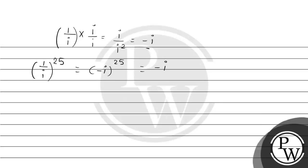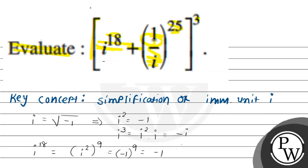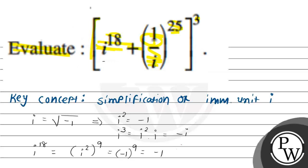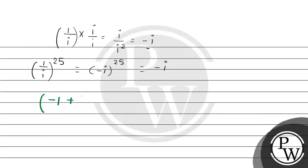Now, substituting this value into the main expression. We get: i raised to 18 is minus 1, plus 1 upon i entire raised to 25, which is minus i raised to 25. We already simplified that power, and the entire bracket is raised to cube. Now,